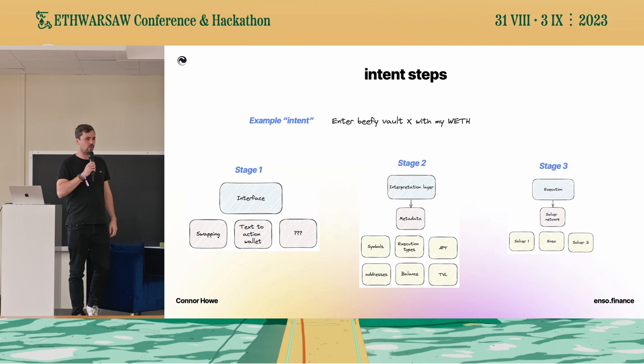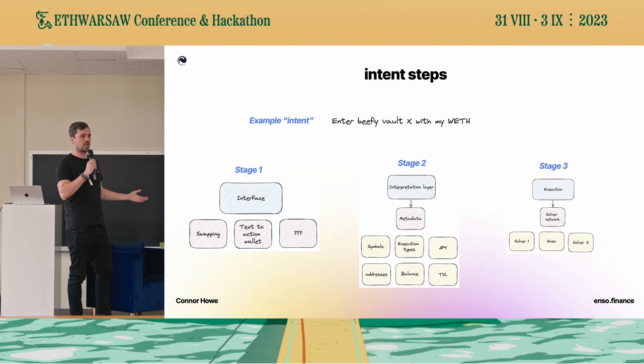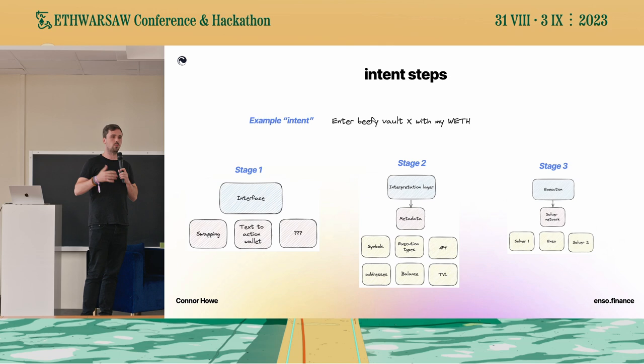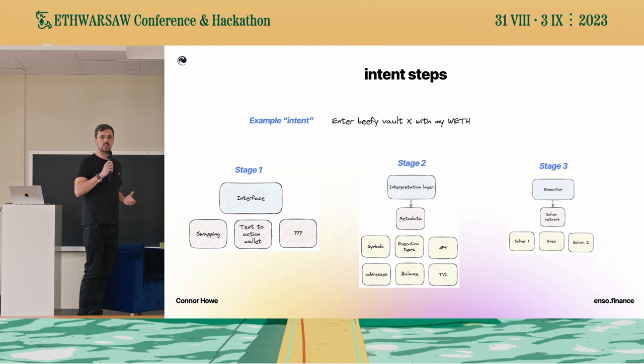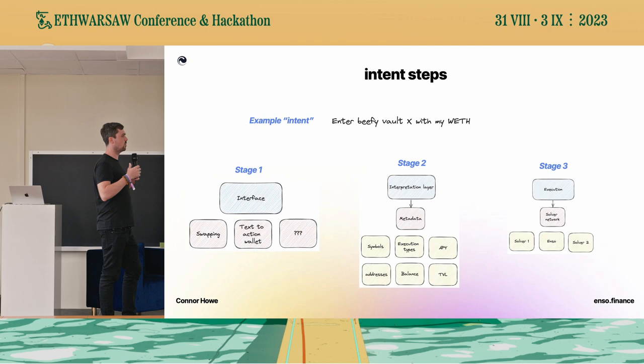A lot of people only talk about the execution of DeFi, but to get there you need, first, an interface — whether it's simply stating from token A to token B, or a text-to-action using a language model, like 'I have X token and I want to generate the most APY.' That needs a second part that's not really talked about: an interpretation layer — users defining what they'd like, and then understanding what that means to actually execute on it. On the execution side, such as CowSwap, Uniswap X, or 1inch Fusion, you generally have a solver network. Your request goes there, and whoever can fulfill the order with the best route execution can then execute on behalf of the user.